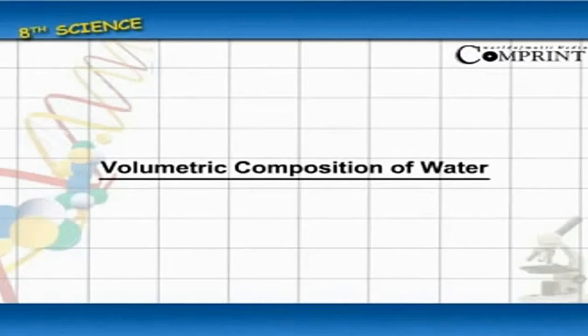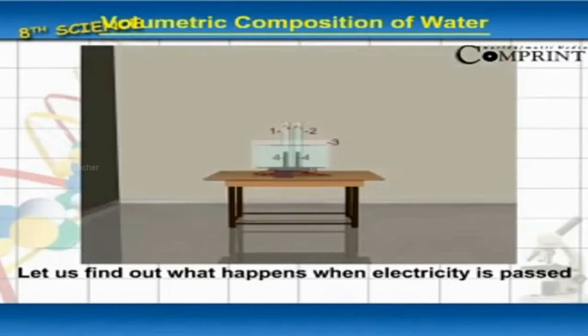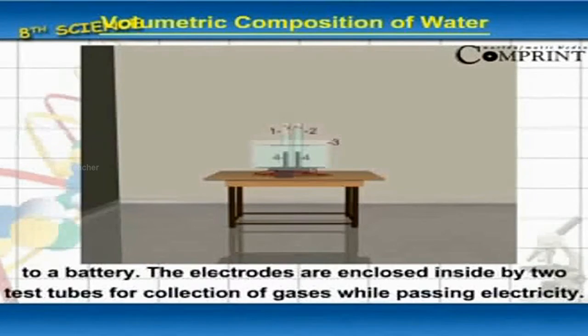Volumetric composition of water. Experiment. Let us find out what happens when electricity is passed into water. For this experiment, we use an apparatus. It contains two carbon electrodes which can be connected to a battery.